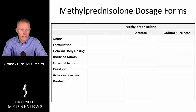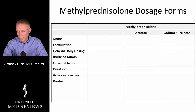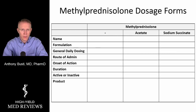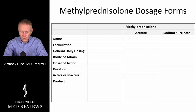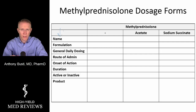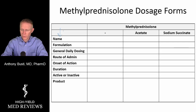Over the next minute or two, we'll go over this table and fill in some of the different variables so you can see them side by side — what makes them similar but also different. This column is arranged by name, formulation, general dosing, onset, duration, and the dosage formulation of the product itself.